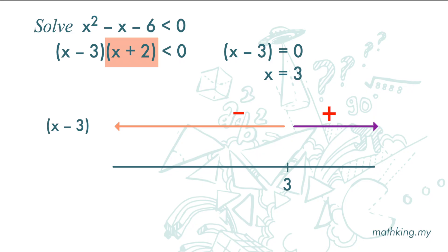Next, we look at the second term. x plus 2 equals 0, x equals negative 2. We mark negative 2 on the number line. And for x plus 2, anything more than negative 2 will give us a positive result, and anything less than negative 2 will give us a negative result.